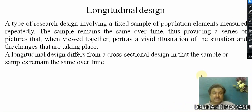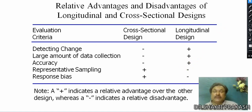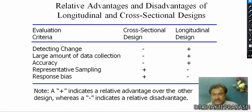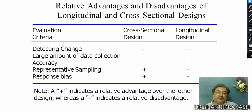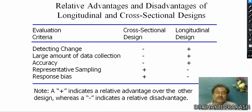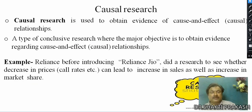Now we look at the relative advantages and disadvantages of longitudinal versus cross-sectional research design. For detecting changes, cross-sectional design is not as effective, but longitudinal is much better because we are able to compare a large amount of data. Accuracy is also better in longitudinal research. Representative sampling is a benefit of cross-sectional research design, and response bias is also a consideration in cross-sectional design.